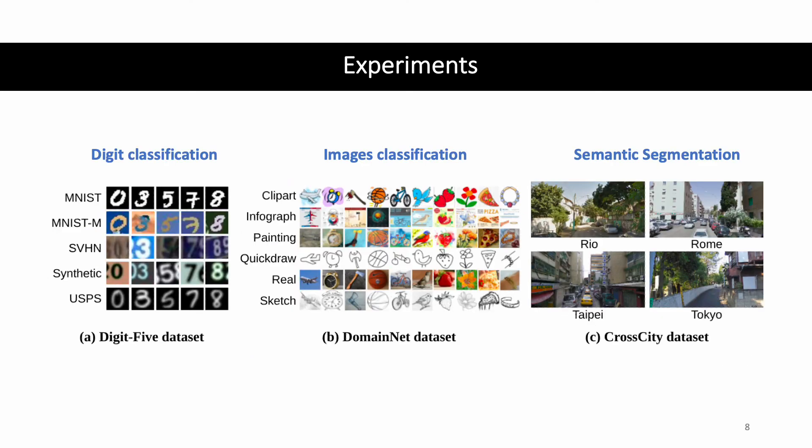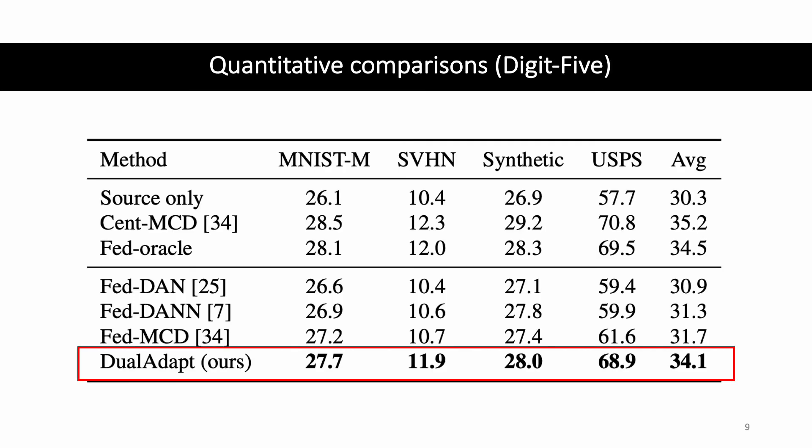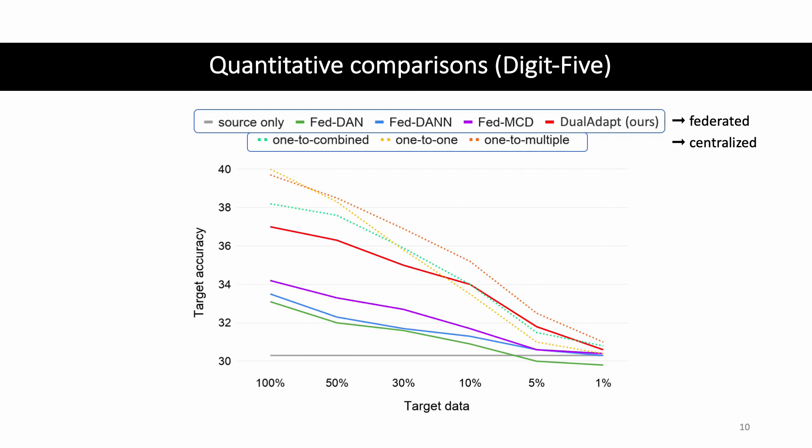We perform extensive experiments on multiple datasets for different computer vision tasks. Here, we show the quantitative results on the Digit-5 dataset. We demonstrate that Dual ADAPT performs better than the other federated-based methods. In this figure, we evaluate the performance of different methods using various amounts of target data for training.